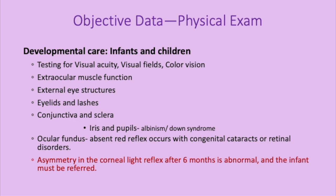By about age six or seven, in addition to checking visual fields, you are going to start assessing for color blindness using the Ishihara chart, which many patients probably received as part of their physical for school.